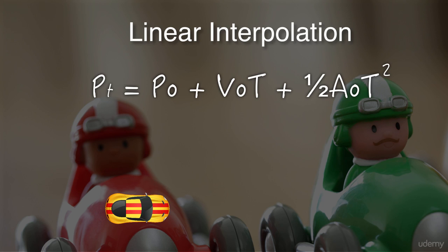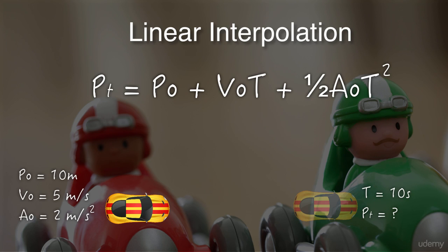Let's look at an example. Imagine that we've received a message that tells us that a car's position is 10 meters along a straight track, and its velocity is 5 meters per second, and its acceleration is 2 meters per second squared. After 10 seconds we want to interpolate where that car is, assuming it's traveling in a straight line.